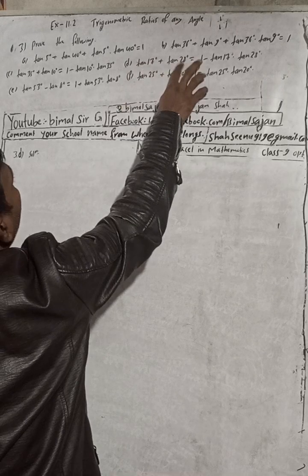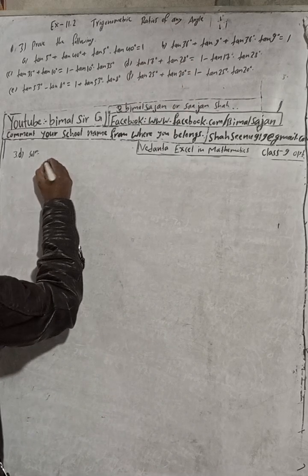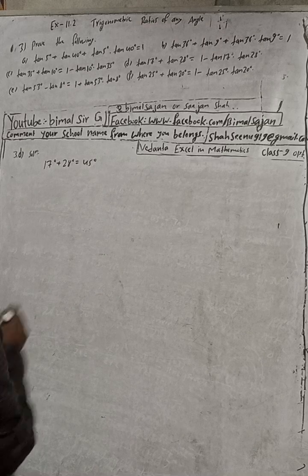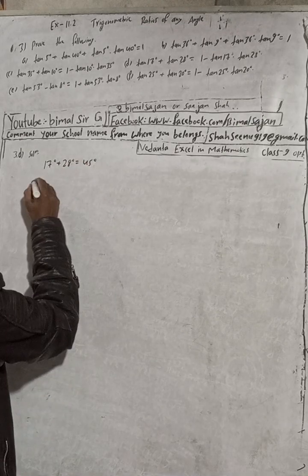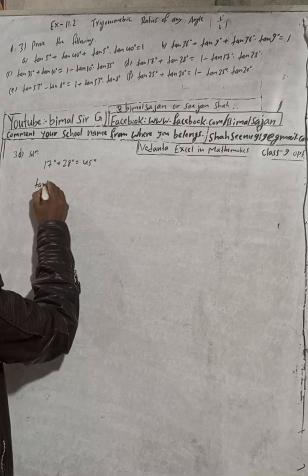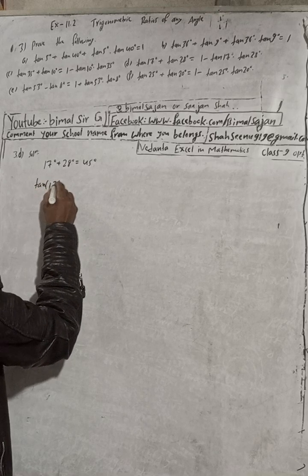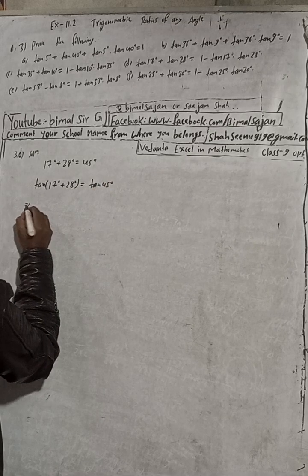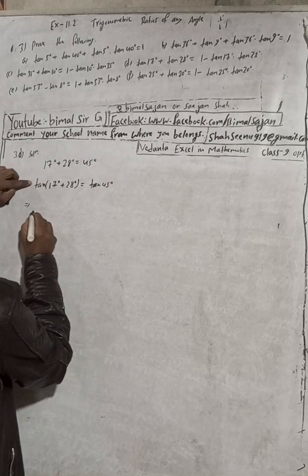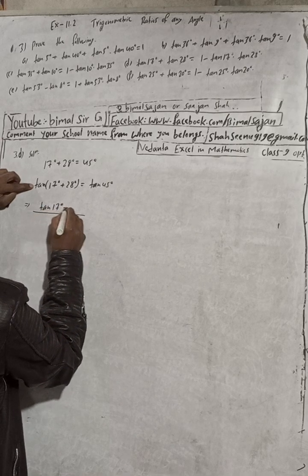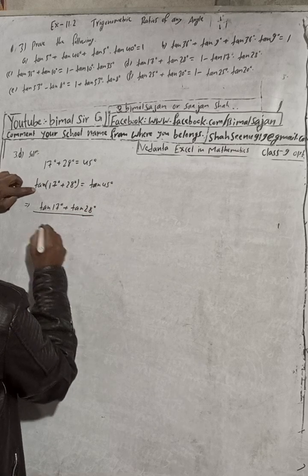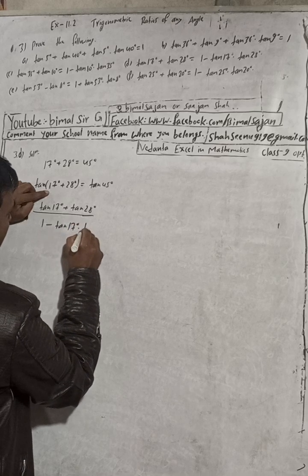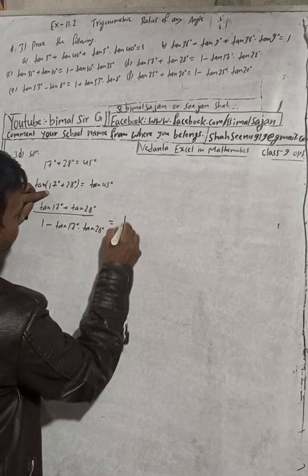We see that 17 + 28 = 45, so 17° + 28° = 45°. Take tan both sides: tan(17° + 28°) = tan45°. Apply the tan(A + B) formula: (tan17° + tan28°) / (1 − tan17°·tan28°) = 1.